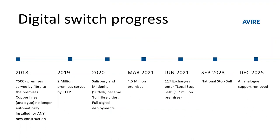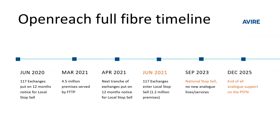Local stop-sells like the one in Salisbury started in 2020, with exchange areas given 12 months notice before the local stop-sell comes into effect. By March 2021, there were four and a half million premises served by FTTP — a massive increase from 2 million in 2019. In June 2021, 117 exchange areas entered local stop-sell, putting 1.2 million premises at risk of losing their analog support. By September 2023, we'll see the national stop-sell, and by December 2025, all analog support will be removed.